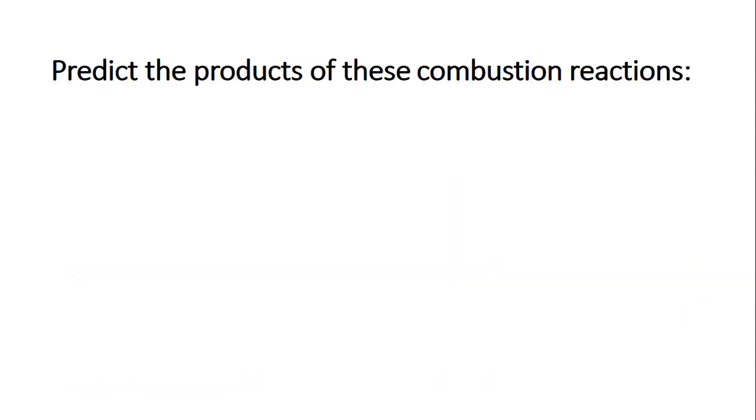Let's predict the products of three combustion reactions. In the first example, we have methane gas, which is often in a chemistry classroom, being reacted with oxygen gas. The two products of this chemical reaction are carbon dioxide and water vapor. Again, predicting the products of combustion reactions don't make it harder than it ought to be. The products are always the same and always carbon dioxide and water vapor.